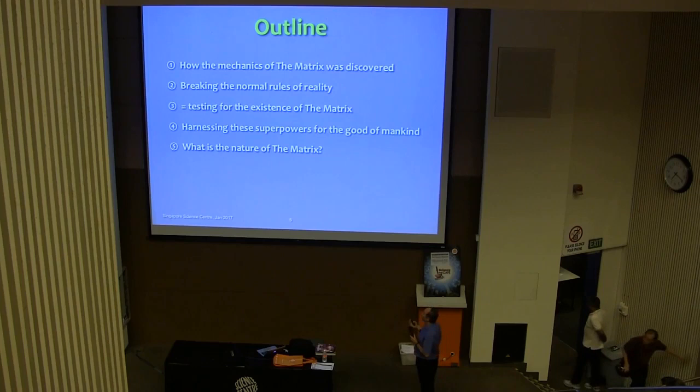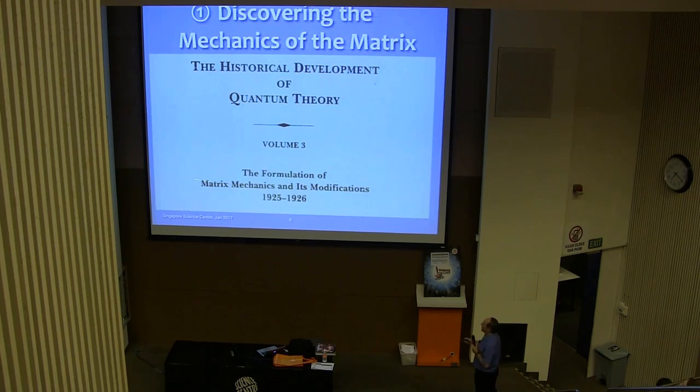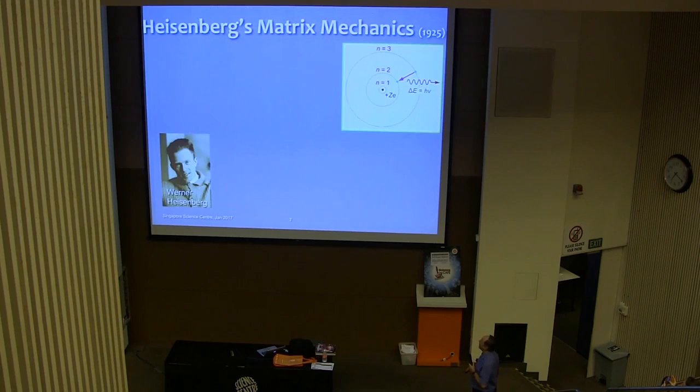So you see, this is the beginning of the matrix, the discovery of the mechanics of the matrix, as described in this book here. The formulation of matrix mechanics, you see, I wasn't making it up. The physicists here will know that this is a bit of a joke. But nevertheless, it was around this time, 1925 to 1926, that we started to get a glimpse into how strange the quantum world really was. And the person I'd say most responsible for this was a very young German physicist Werner Heisenberg.